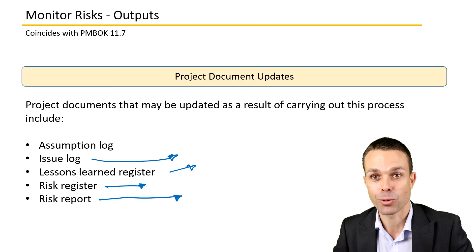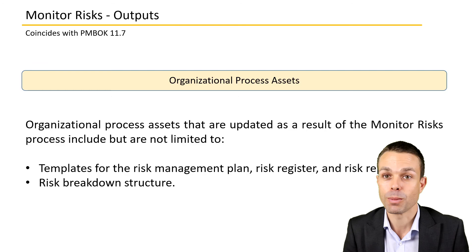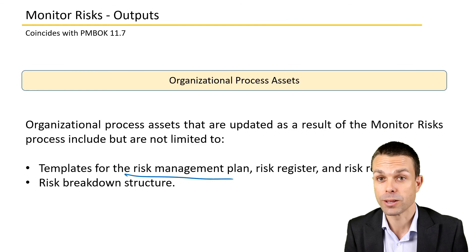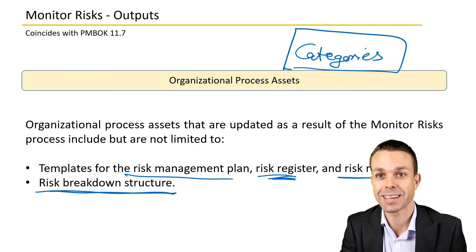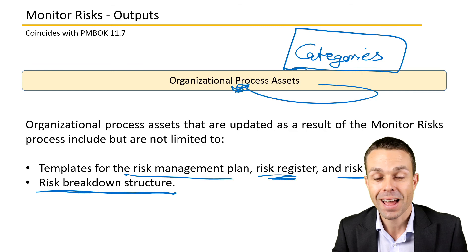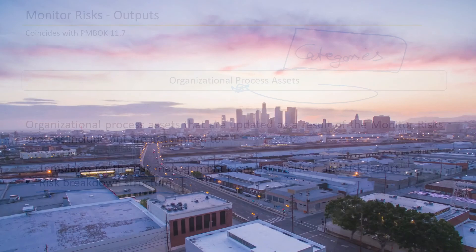And of course, lastly, organisational process assets, where we might need to update templates for the risk management plan if we're adjusting those within the organisation, the risk register itself or templates for the risk report, and the risk breakdown structure — we might be adding categories. So now we have additional risk categories that can go back into the organisational process assets. And those are all the details for monitoring the risks as part of the project management body of knowledge.